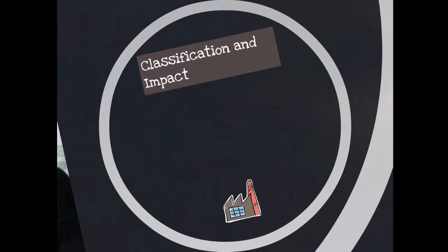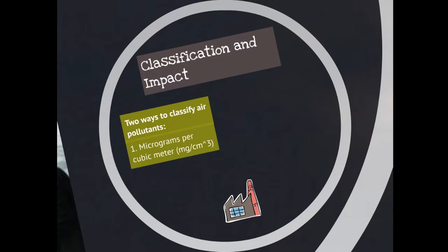Believe it or not, there are many ways to classify air pollutants, but the two main ones are by micrograms per cubic meter of air for large particles and by parts per million for smaller gas particles. However, classifying particles is just one aspect. The other is determining how these toxic pollutants affect us.